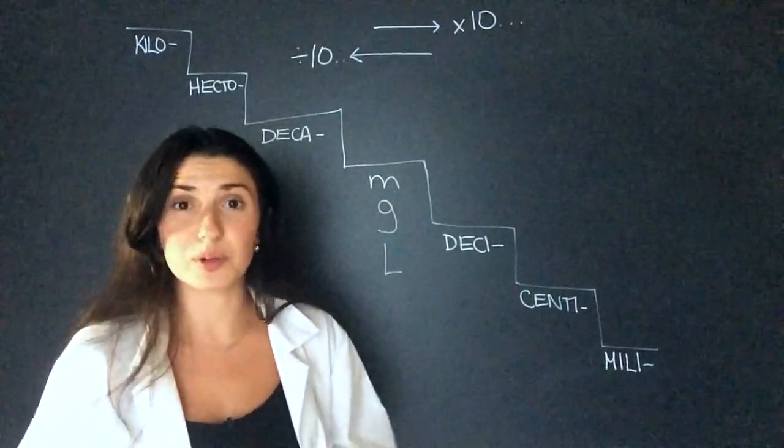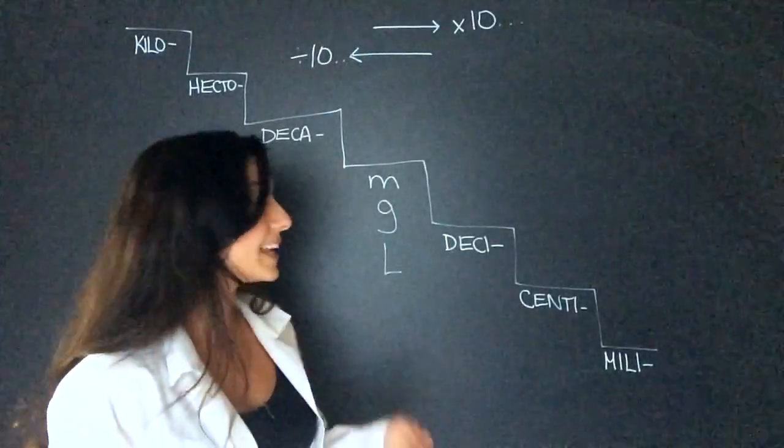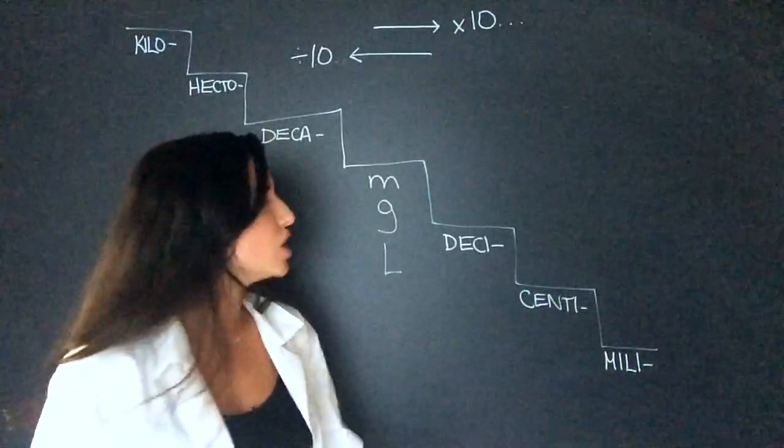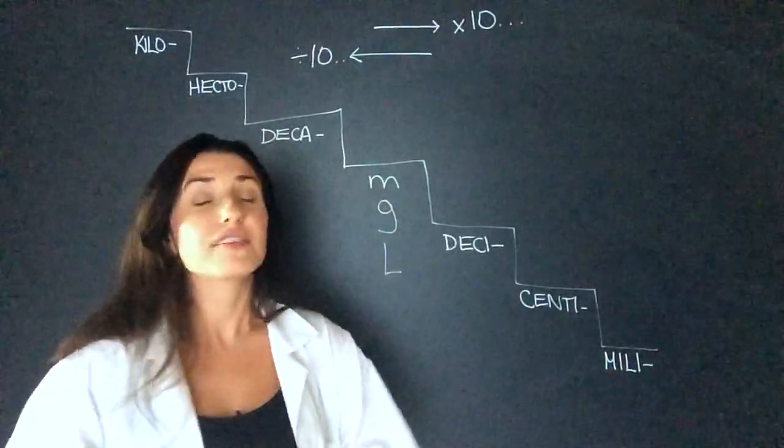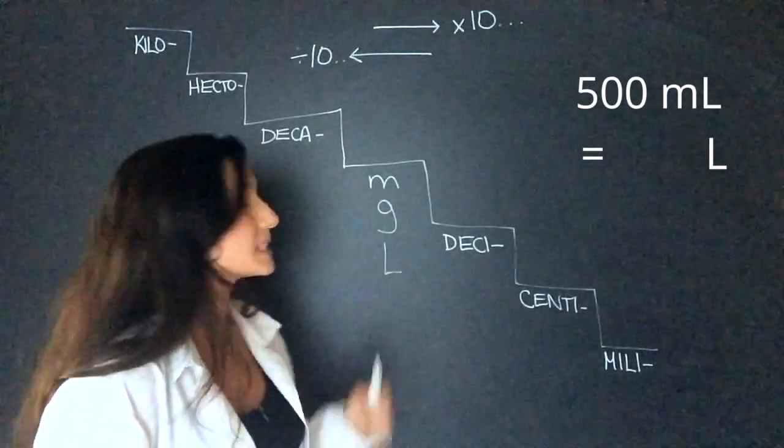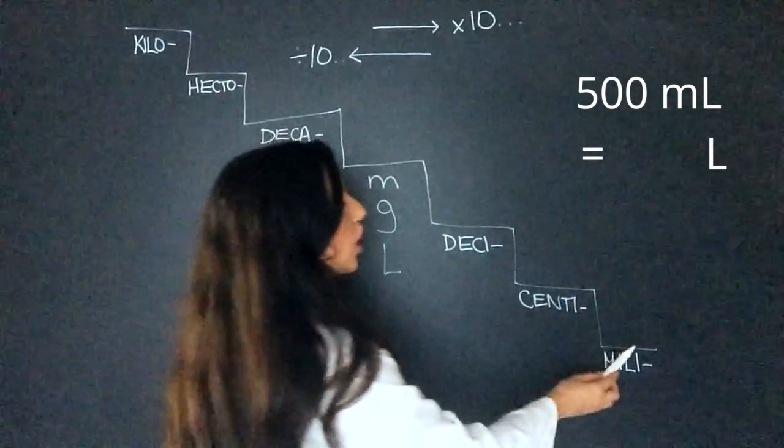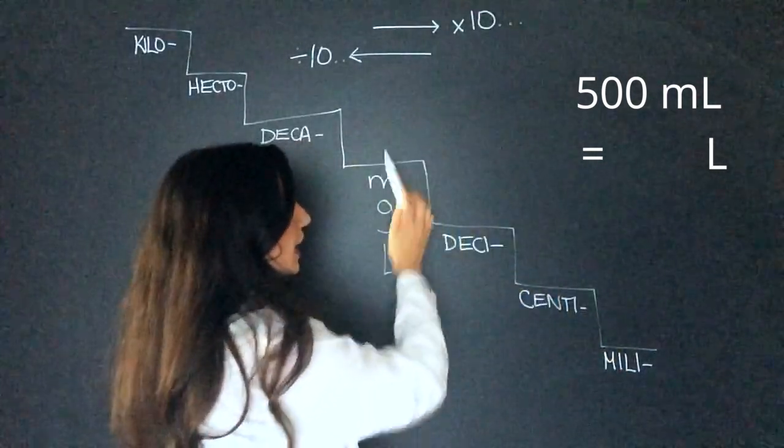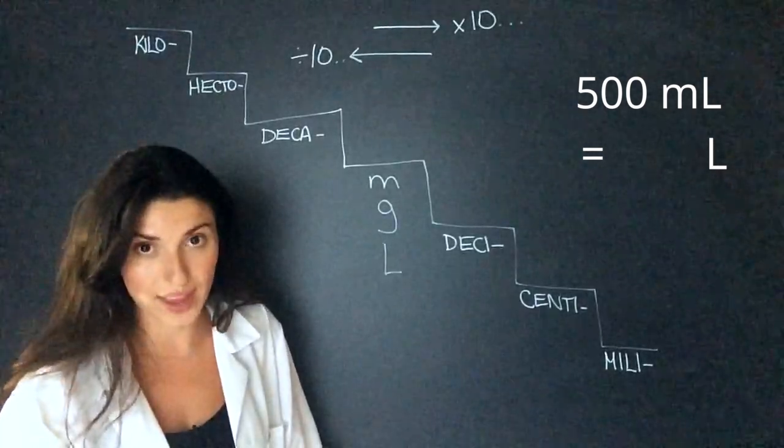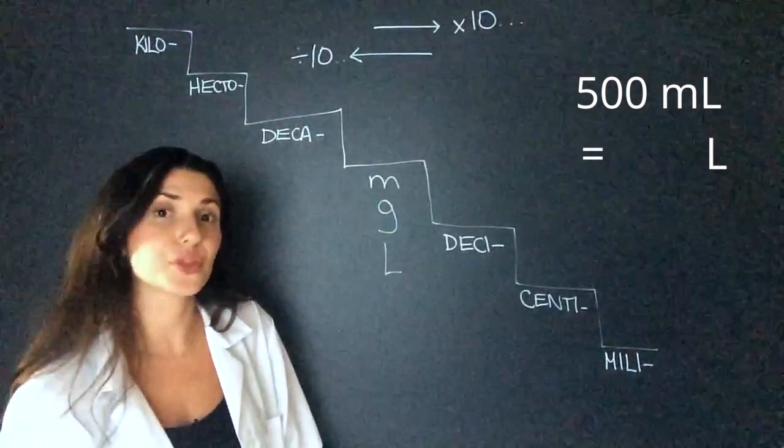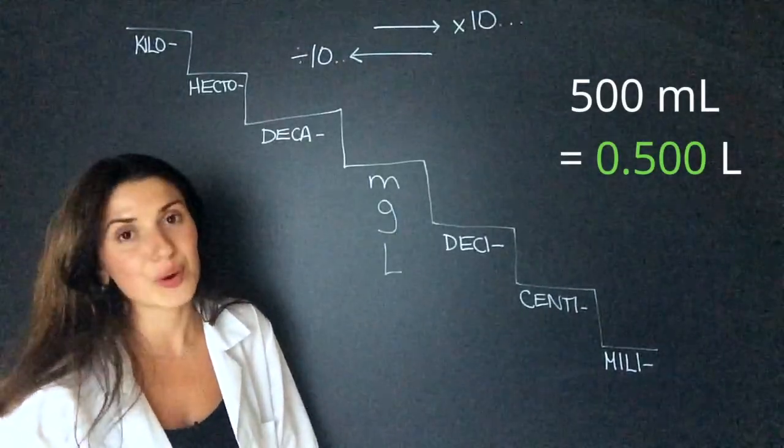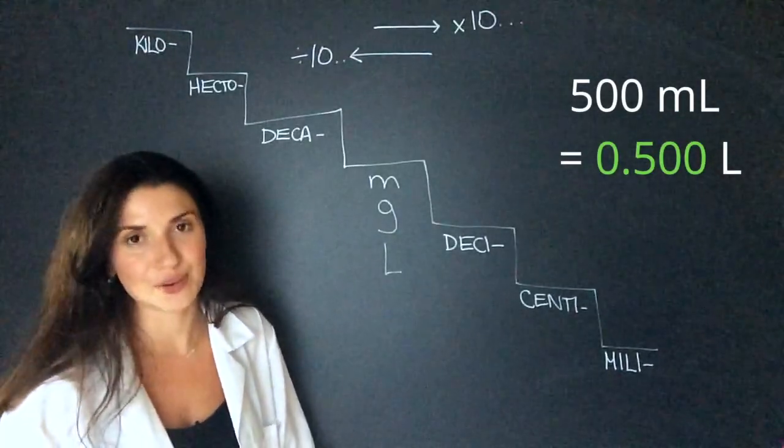We're going to learn about molarity tomorrow. And in that case, we always have to have liters and they often give us milliliters. So let's say we have 500 milliliters of a liquid and we need that to be in liters. We would go one, two, three, but this time we're going up. So we have to divide or take the zeros away. So if we move the decimal three places from 500, we're going to have 0.500 liters.